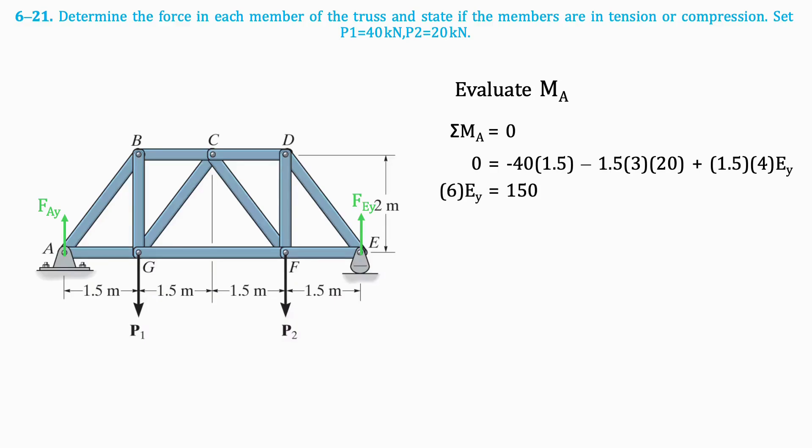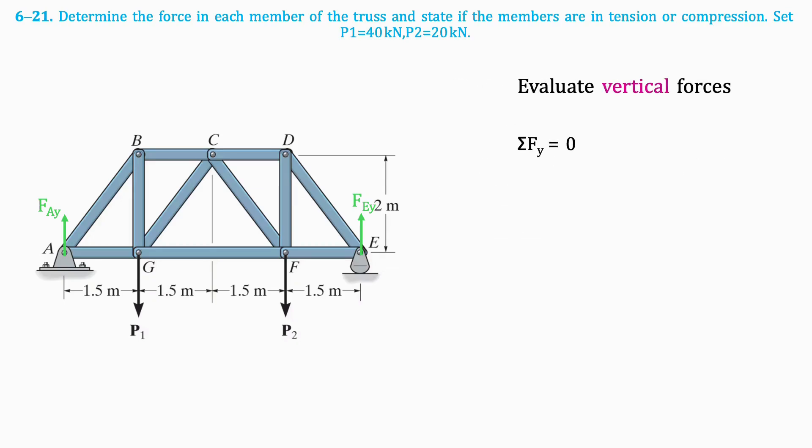The result is that EY equals 25 kN. Next, we'll take the sum of vertical forces, which results in the following equation. We just solved for the value of EY, so after substituting this value into the equation, we can isolate for the force AY, which results in 35 kN.